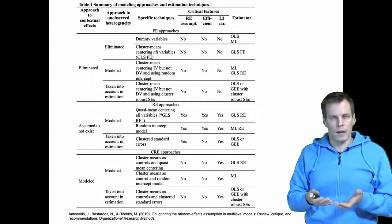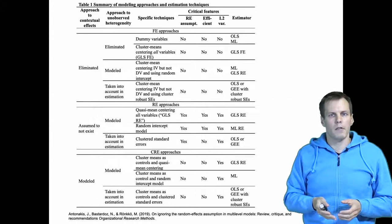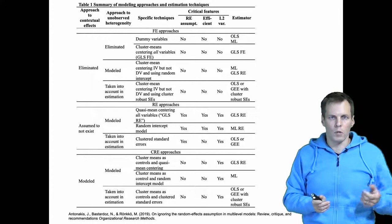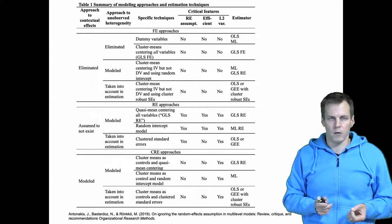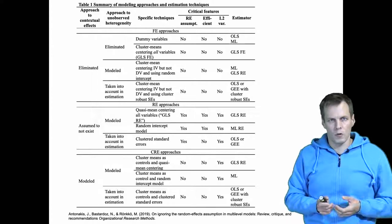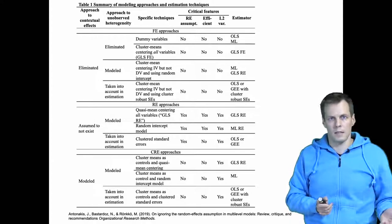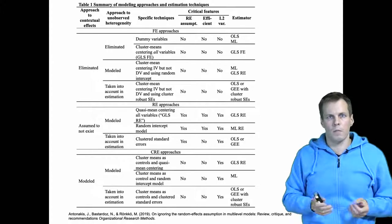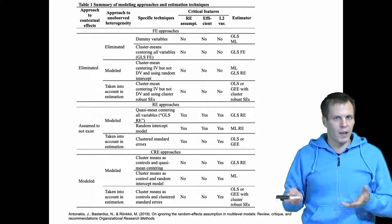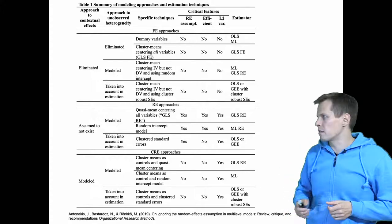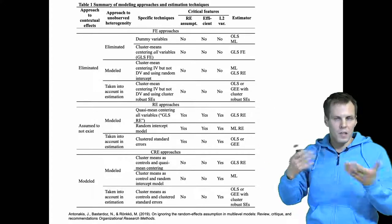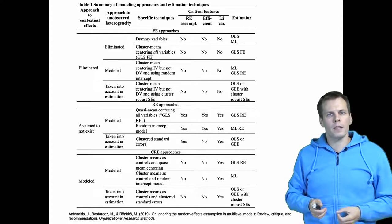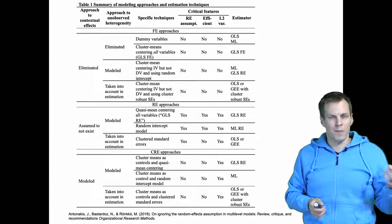If you erroneously assume that there is no clustering or no unobserved effects, then the outcome will be that your standard errors will be incorrect. If you incorrectly assume that the contextual effect doesn't exist, then your estimates will be inconsistent. The estimates are much more important than the standard errors — they are things that, for example, go into a meta-analysis. We divide these techniques into three different categories.